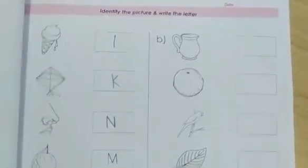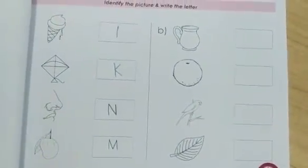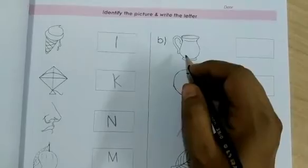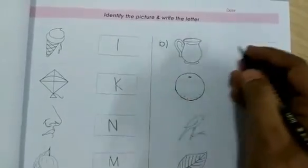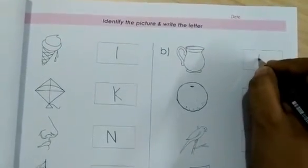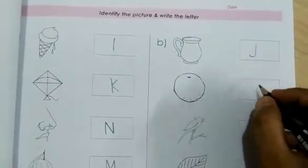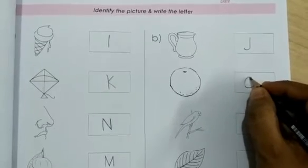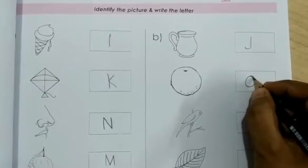Here is our another blank code and some picture. Let's write here. You'll write J. J for jug. O for orange.